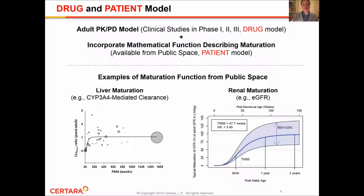These maturation functions are typically available from the public space. As presented here on the slide, on the left panel, we see that the liver maturation function has been characterized in the public space with an underlying mathematical function describing this relationship. We can clearly see that by adulthood, pediatric patients have reached the adult level by about 2 years of age. On the right side of the panel, we are presenting the renal maturation function, which describes how eGFR matures as a function of age. By 1 year of age, patients have reached about 90% of the adult value, and by about 2 years of age, pediatric patients have reached the full adult equivalent renal eGFR.